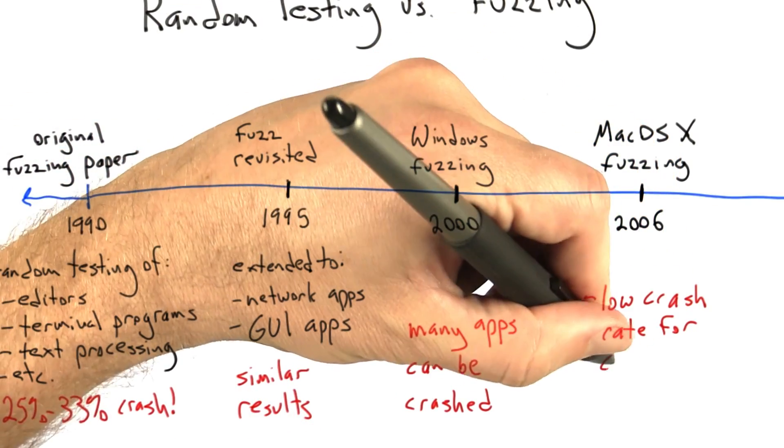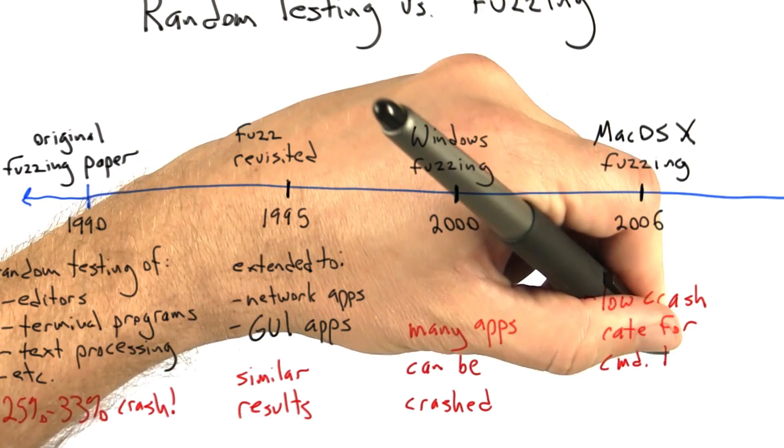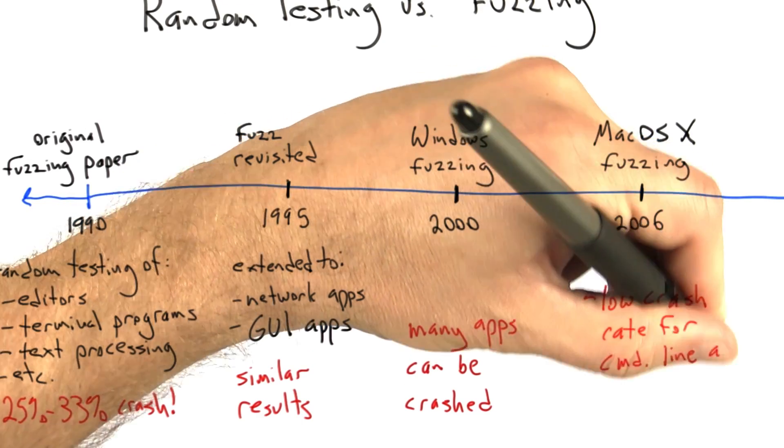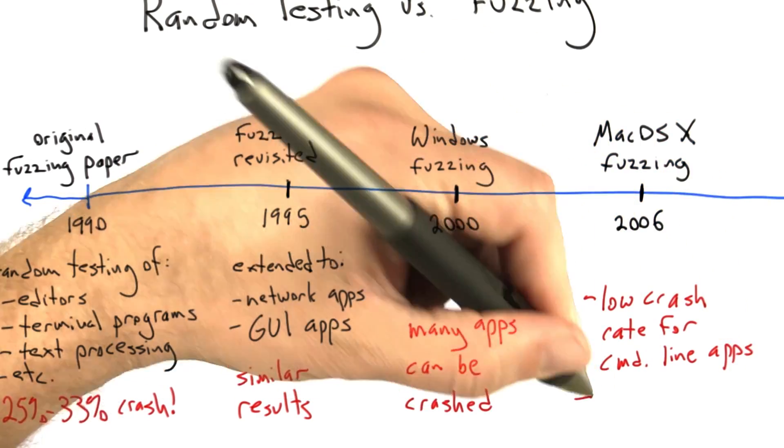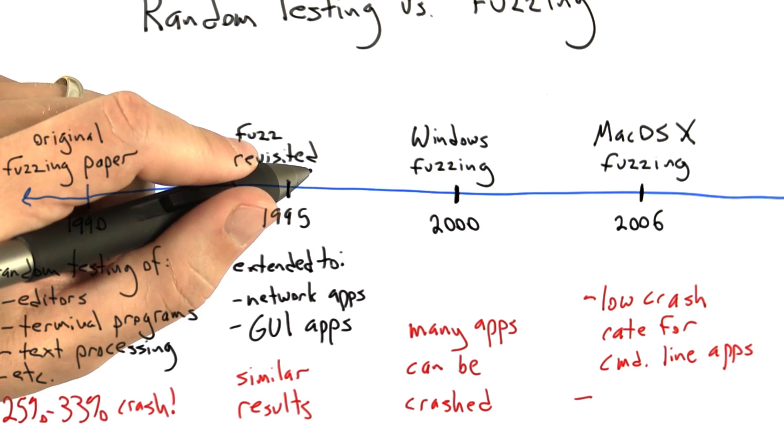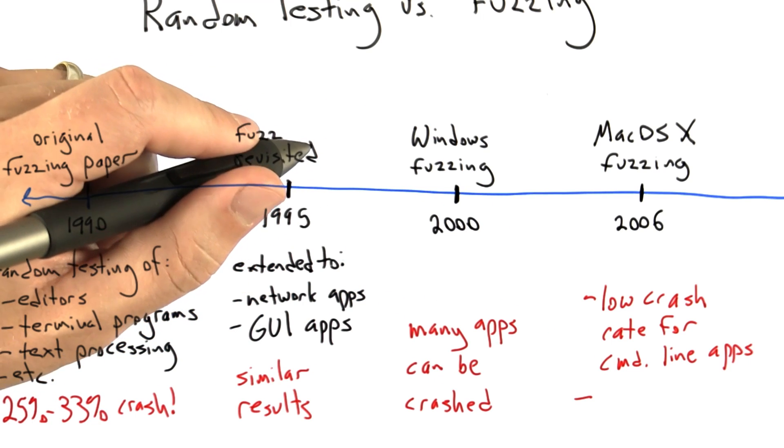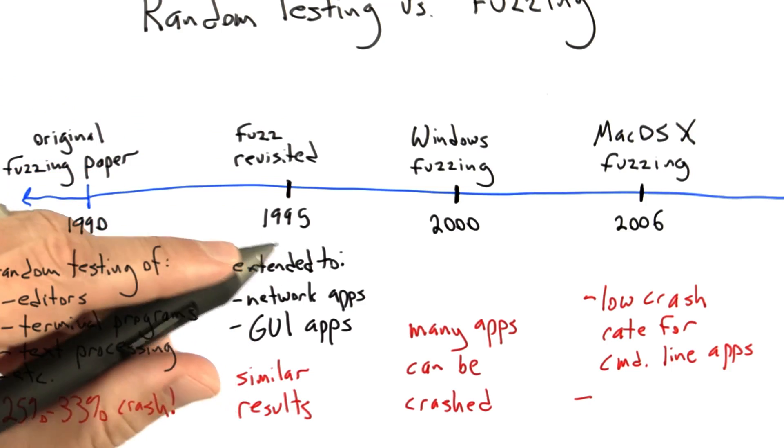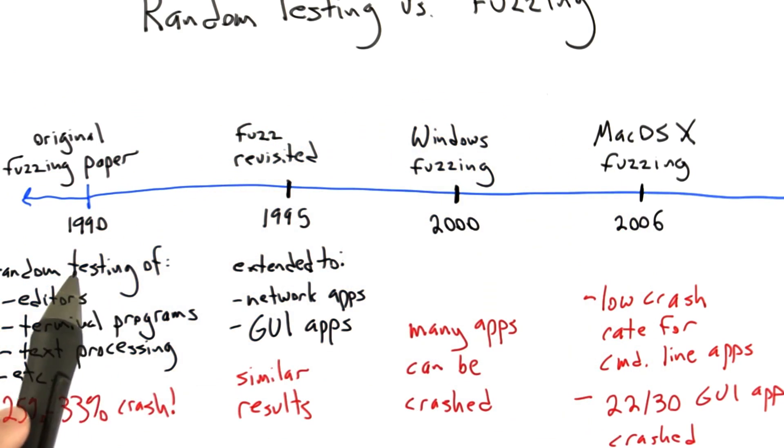Finally in 2006, the most recent installment of a fuzzing study by this group was published. This time they attacked Mac OS X, and they found something a little bit different. The command line utilities on Mac OS X were harder to crash. They found a much lower rate of crashes than they had found earlier. But on the other hand, out of the 30 GUI apps that they tested, 22 could be crashed.